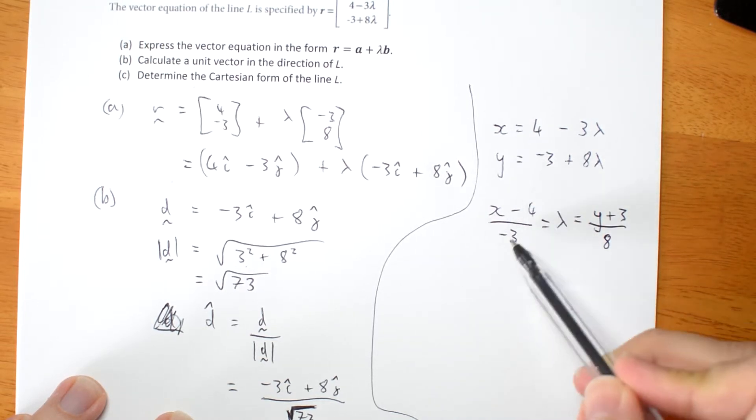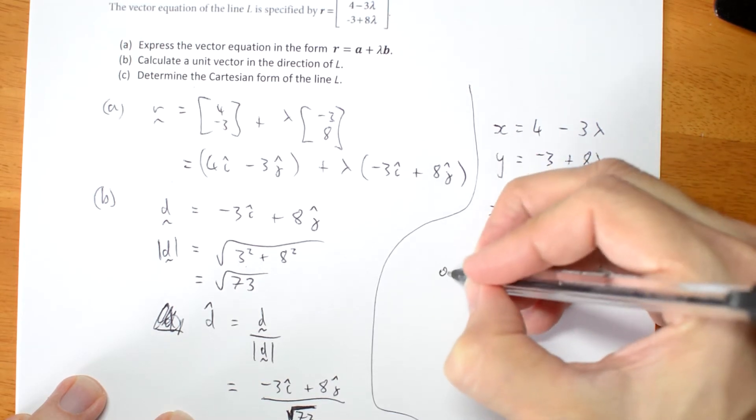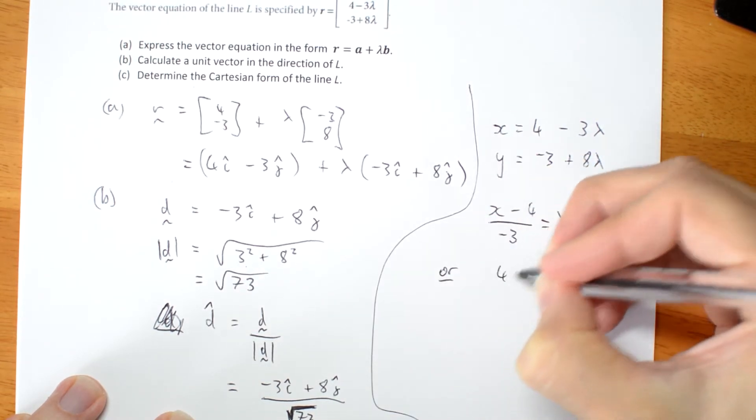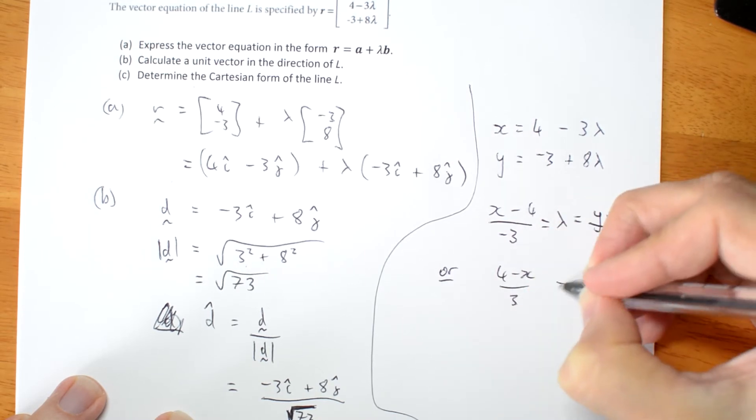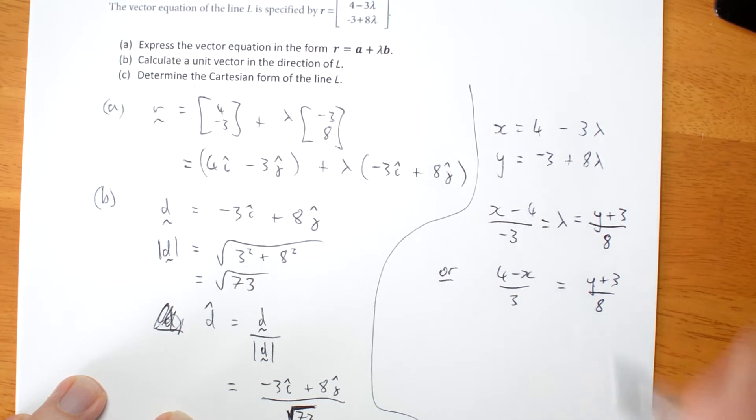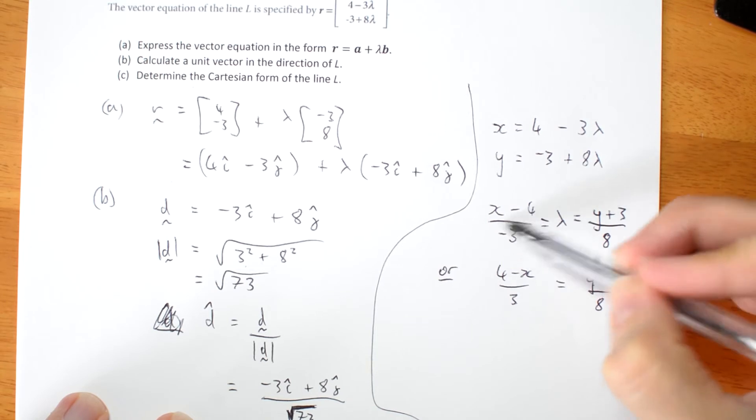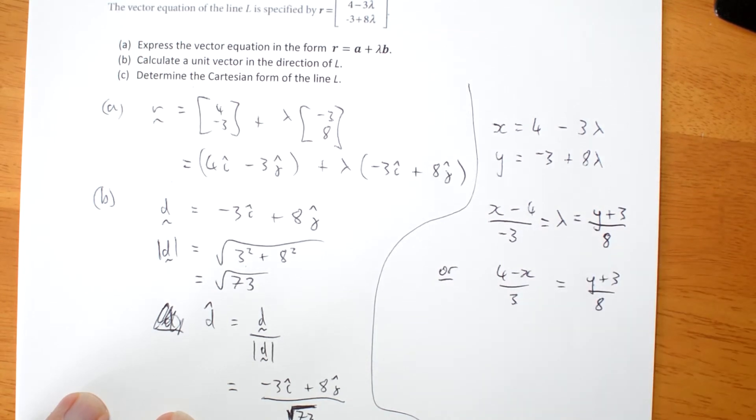Some people would turn this into a plus 3 on the bottom, or 4 minus x on 3 equals y plus 3 on 8. So look out for that. Sometimes you'll see it written like this. It's the same as this. They've just got rid of the negative on the bottom.